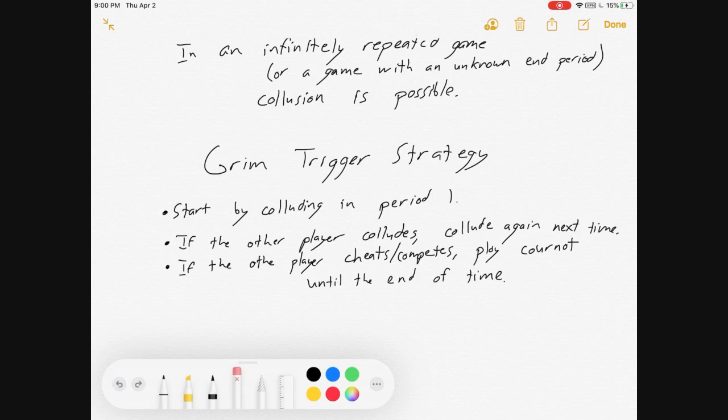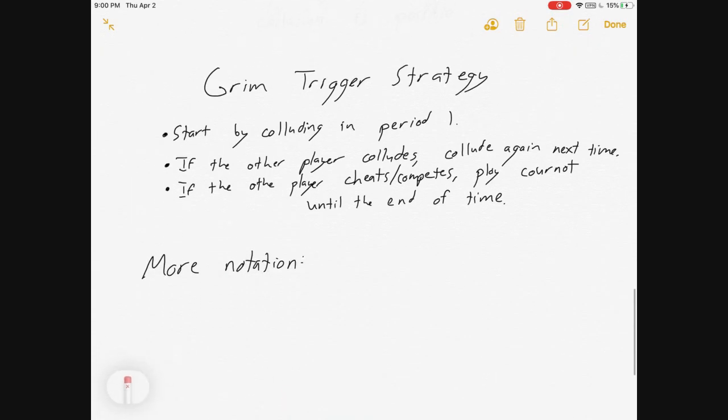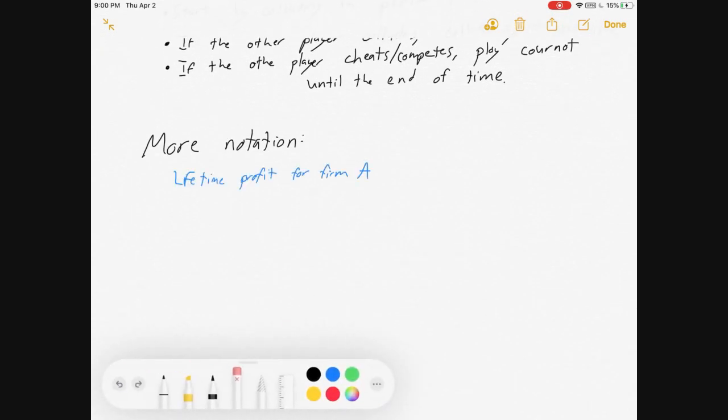So start by colluding. If they collude, respond with more colluding. And if not, compete forever more. That Grim Trigger Strategy can be a Nash equilibrium. So we need more notation. Let's get to it.